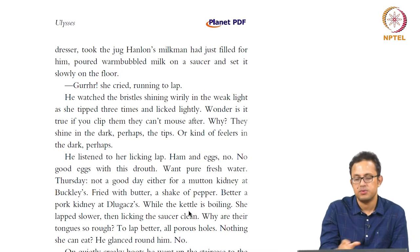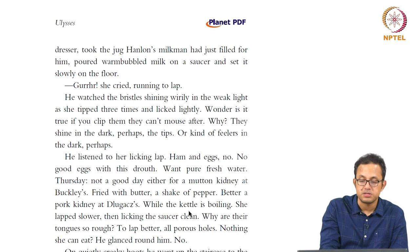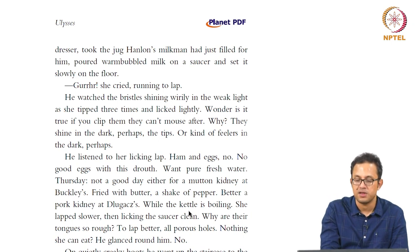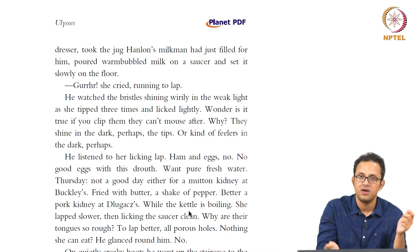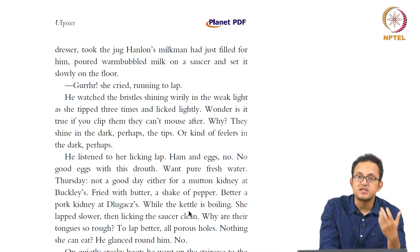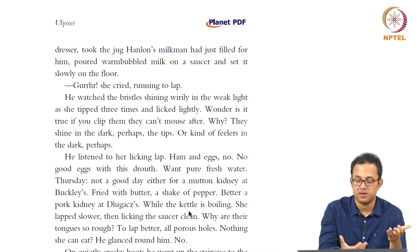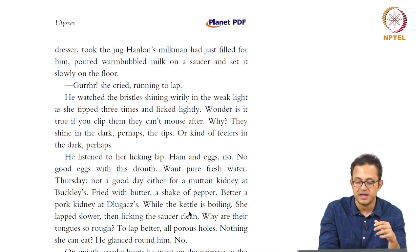The milk metaphor comes back as Bloom has a little conversation with the cat and gives her some milk — he pours warm bubbly milk on a saucer and sets it slowly on the floor. He watches 'her bristles shining warily in the weak light as she tipped three times and licked lightly.' He wonders: 'Is it true if you clip them they can't mouse after?' Note the language: 'warm bubbly' conveys the temperature of the milk effectively. 'To mouse' becomes a verb here — to kill a mouse, which is the whole purpose of having a cat in the domestic setting.